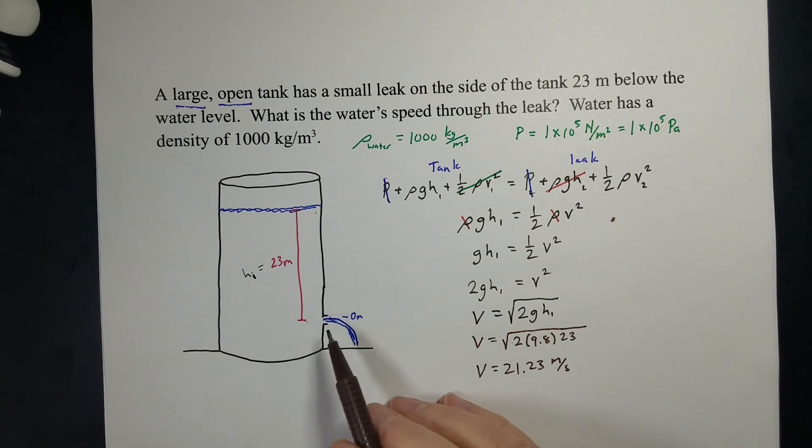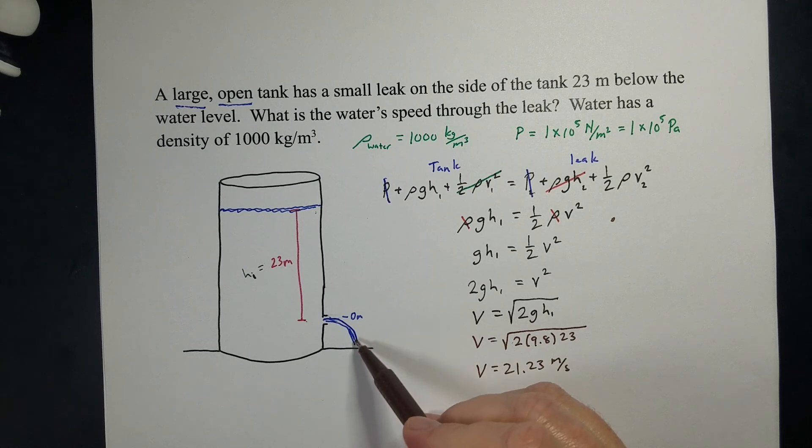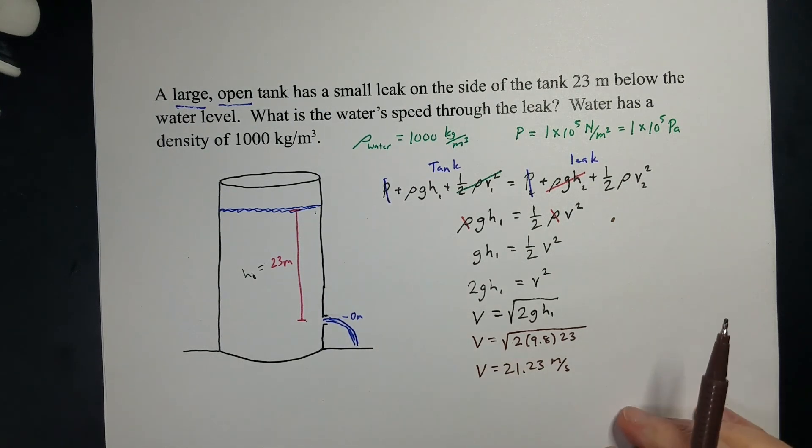And so that's the velocity of the water leaking out of this tank. If that's above the ground, then we can make this into a projectile motion problem and figure out where the water hits on the ground. But for this problem, we're going to stop there.